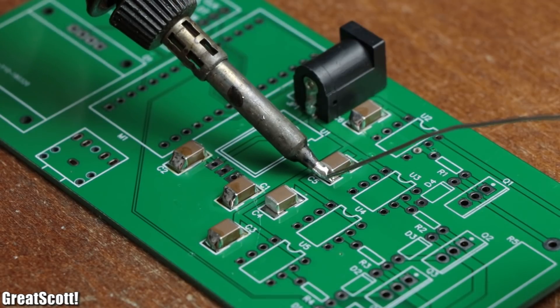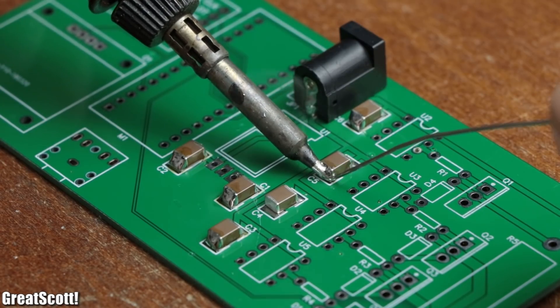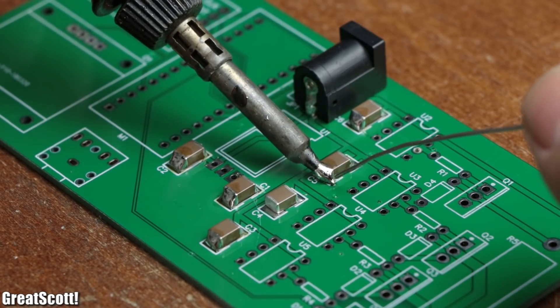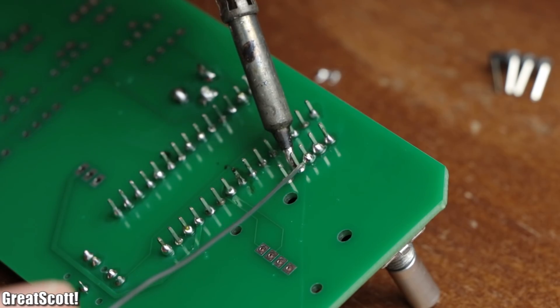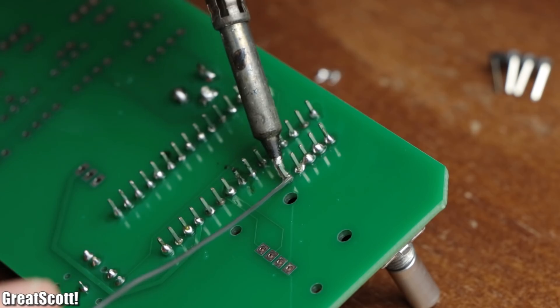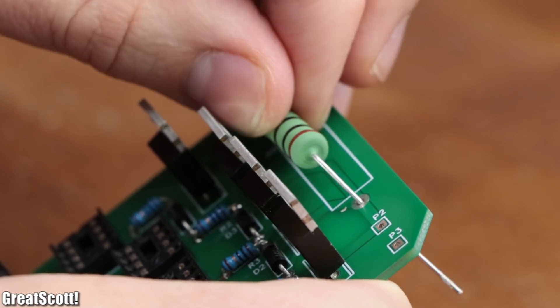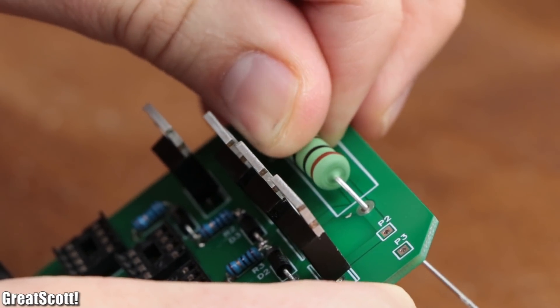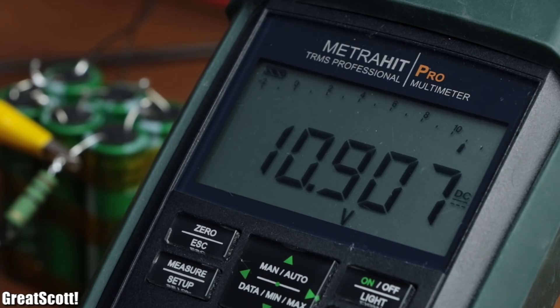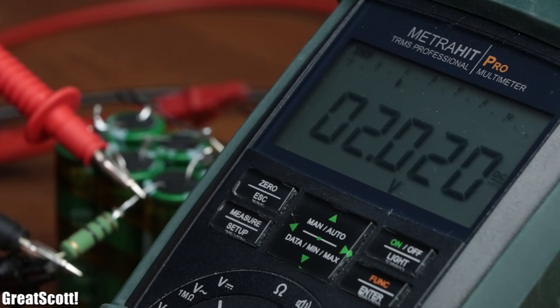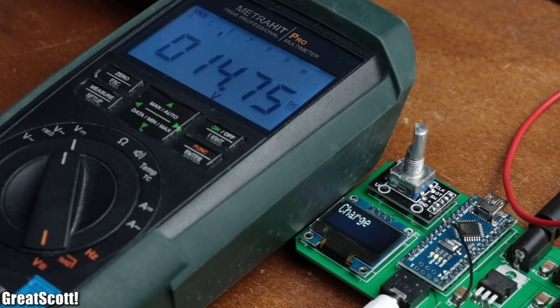That means it was time to firstly solder all the SMD capacitors to the PCB and afterwards all the through-hole components, which all in all took roughly around 30 minutes. And if you're wondering what the big 10 ohm power resistor is used for, then let me tell you that it is used to slowly charge the capacitors while providing feedback voltage to the Arduino so that the microcontroller knows when to stop charging.